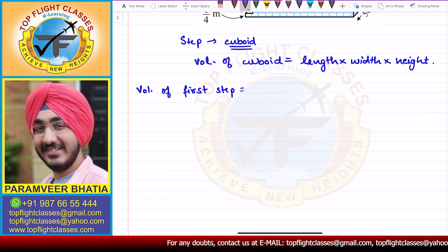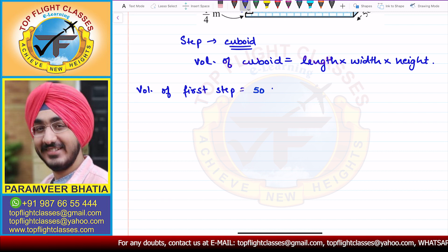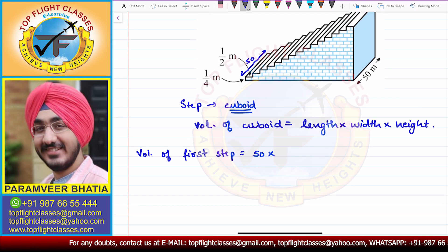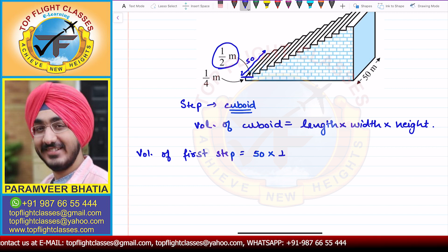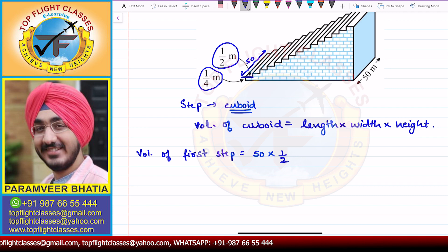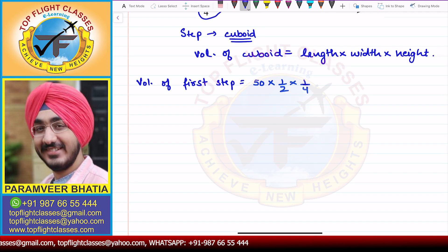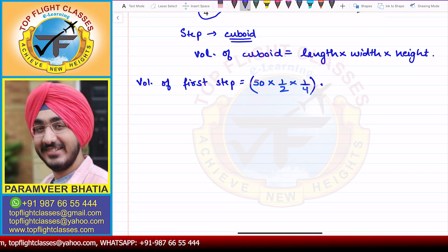So volume of the first step = 50 × width × height. The width is 1/2 meter and the height is 1/4 meter. So 50 × 1/2 × 1/4 gives the volume of the first step in meter cube.